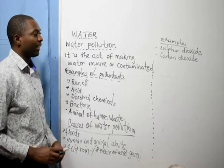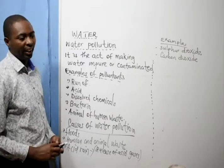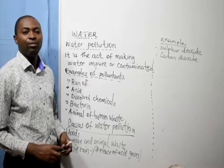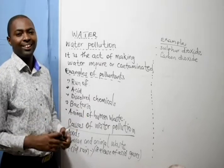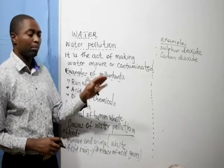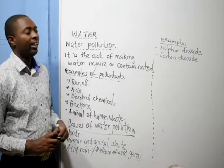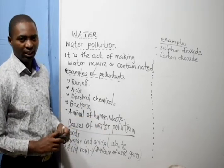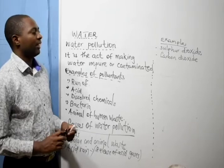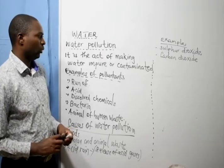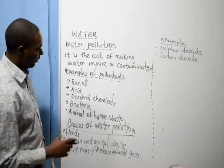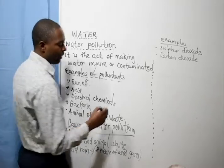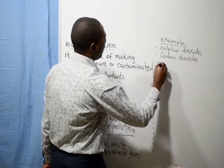Once that acid rain falls on the earth's surface, it affects the plants growing, it affects the aquatic animals — animals living in water such as fish — and also any animal drinking such acidic water.